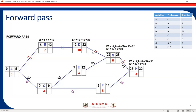This is the forward pass. You can see all the nodes are filled up by the forward pass. In the next video, we'll see the backward pass.